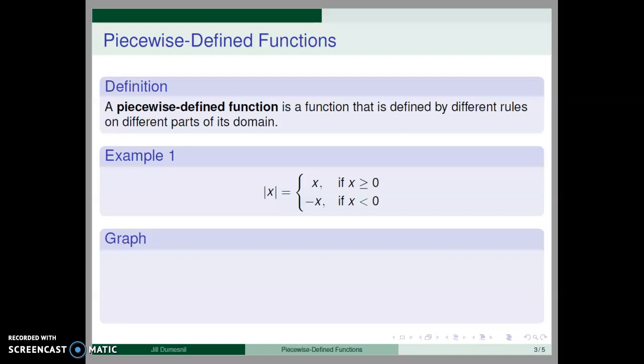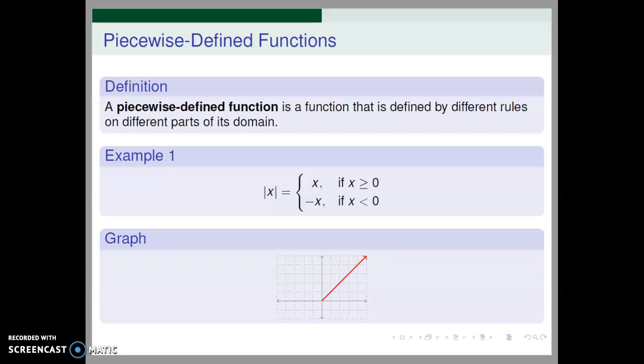To graph the function, we use the rule that is appropriate to the part of the domain we are considering. In this case, we graph y = x when x is greater than or equal to 0, and we graph y = -x whenever x is negative.